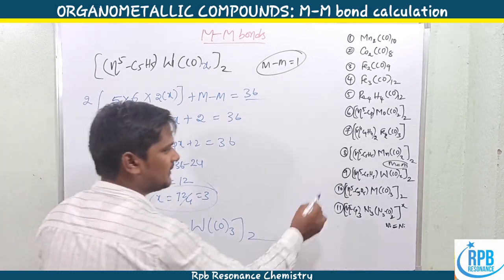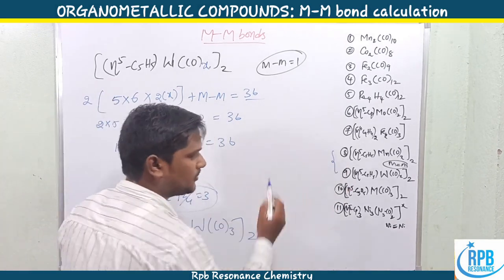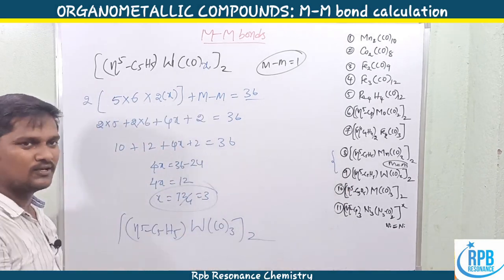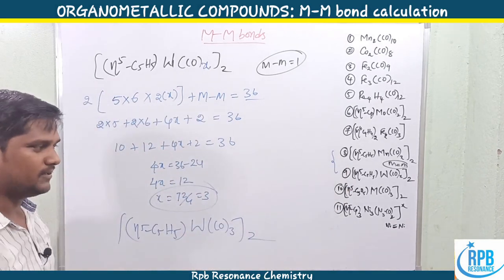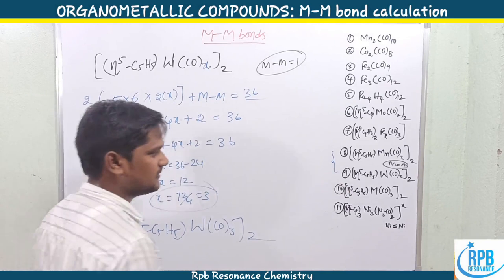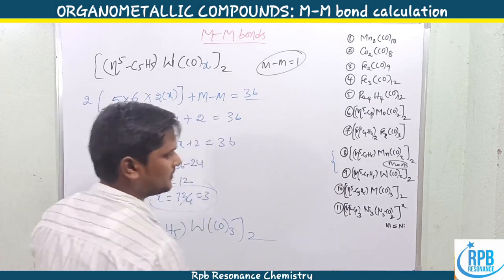So these two problems — examples 8 and 9 — demonstrate how to find hidden carbonyl ligand counts when given the number of metal-metal bonds. Now let's look at problems 10 and 11.